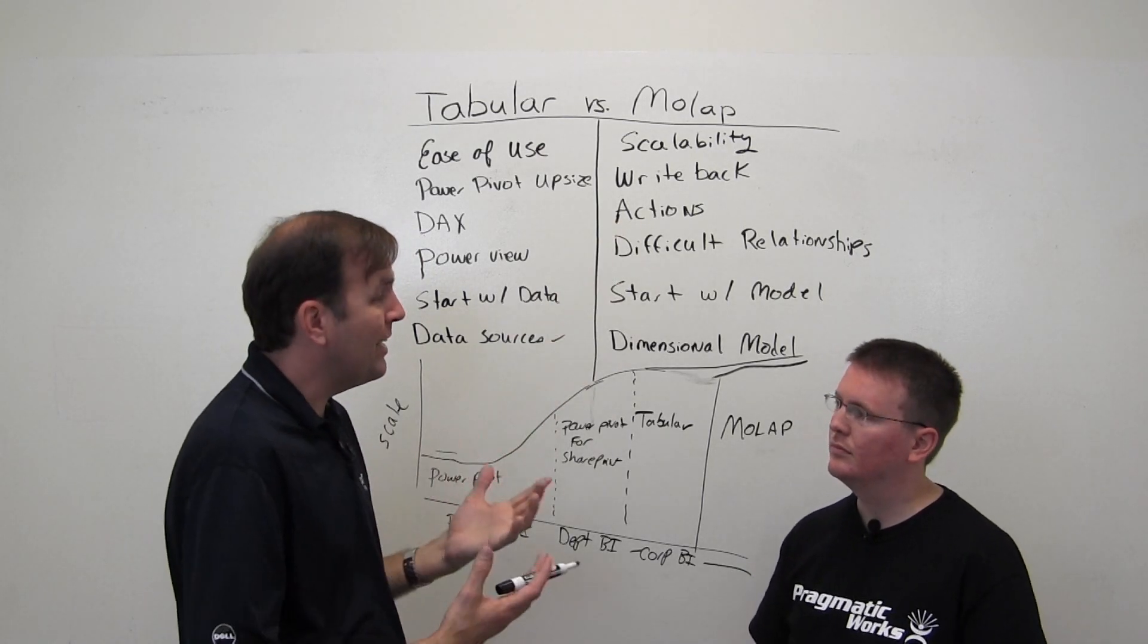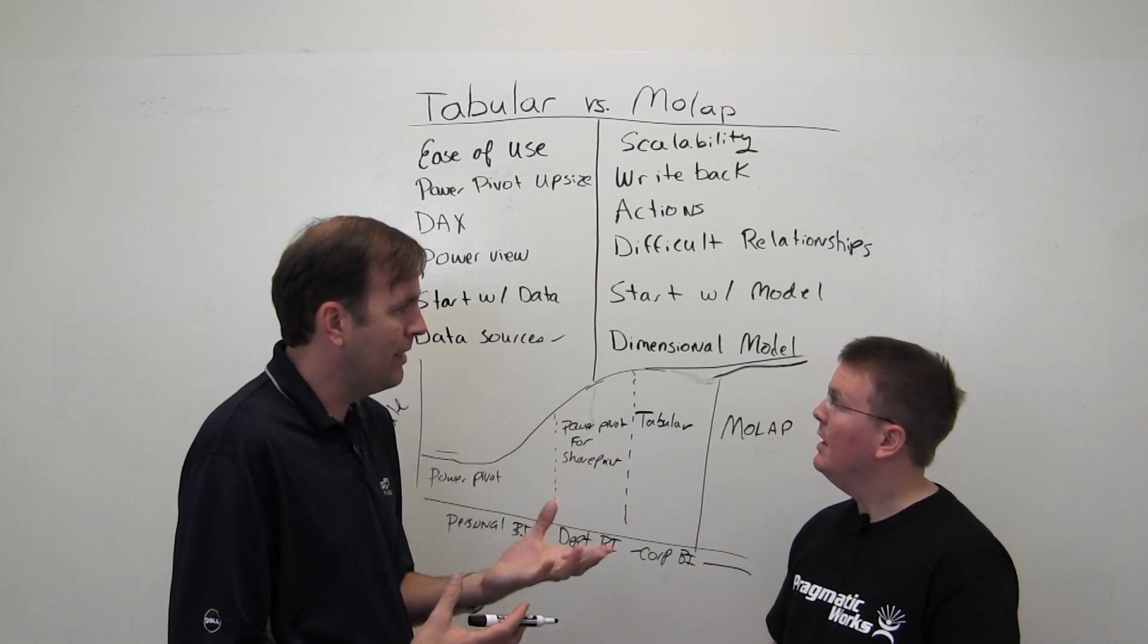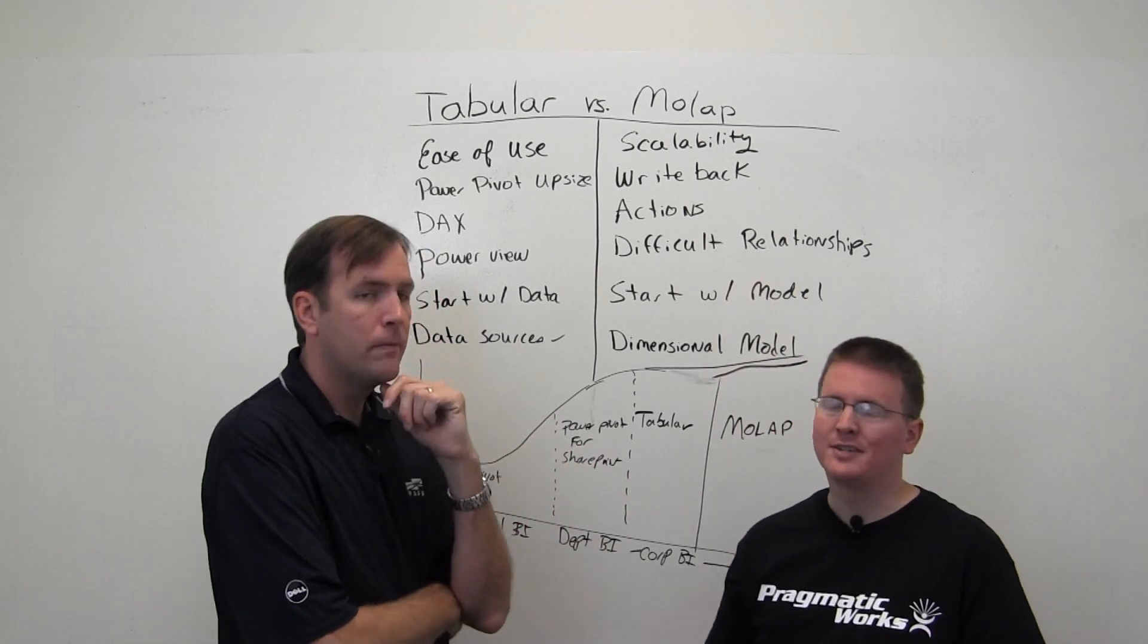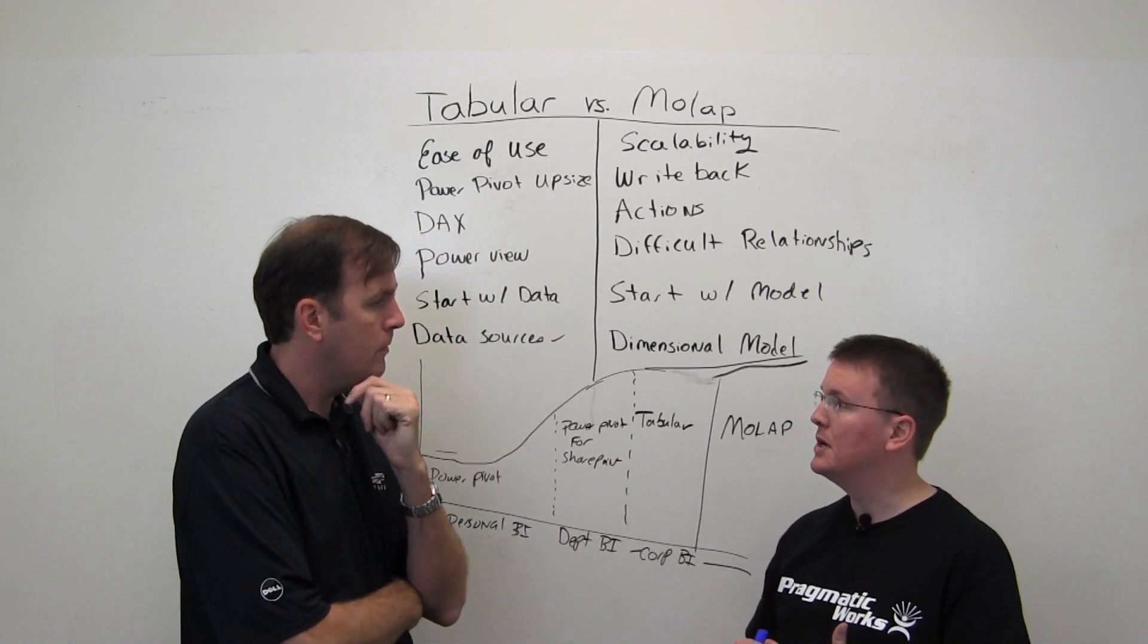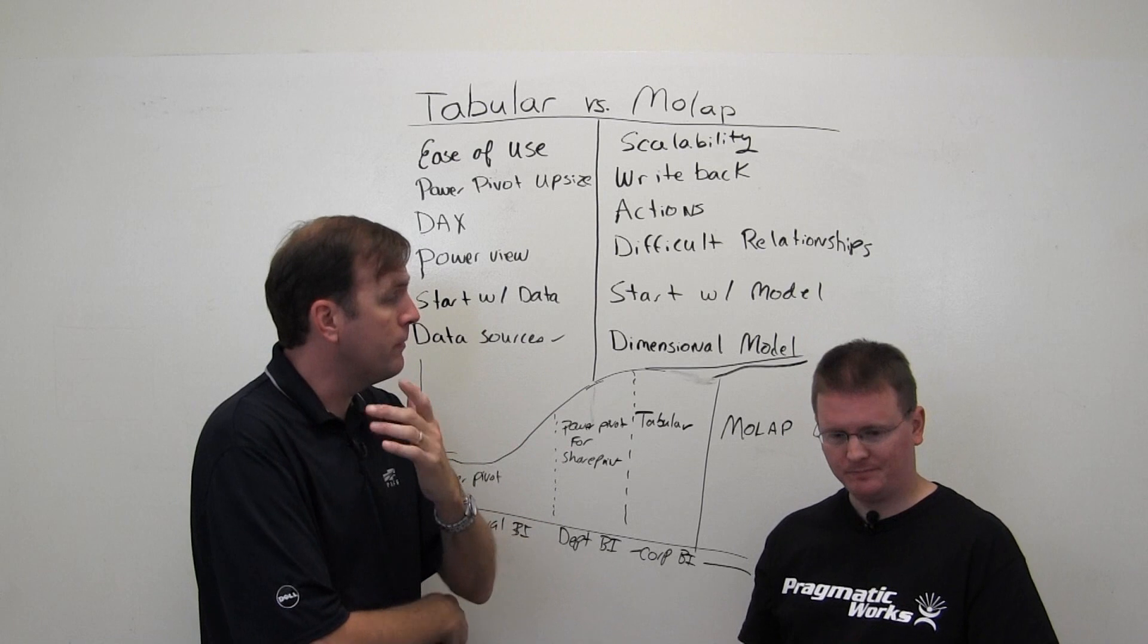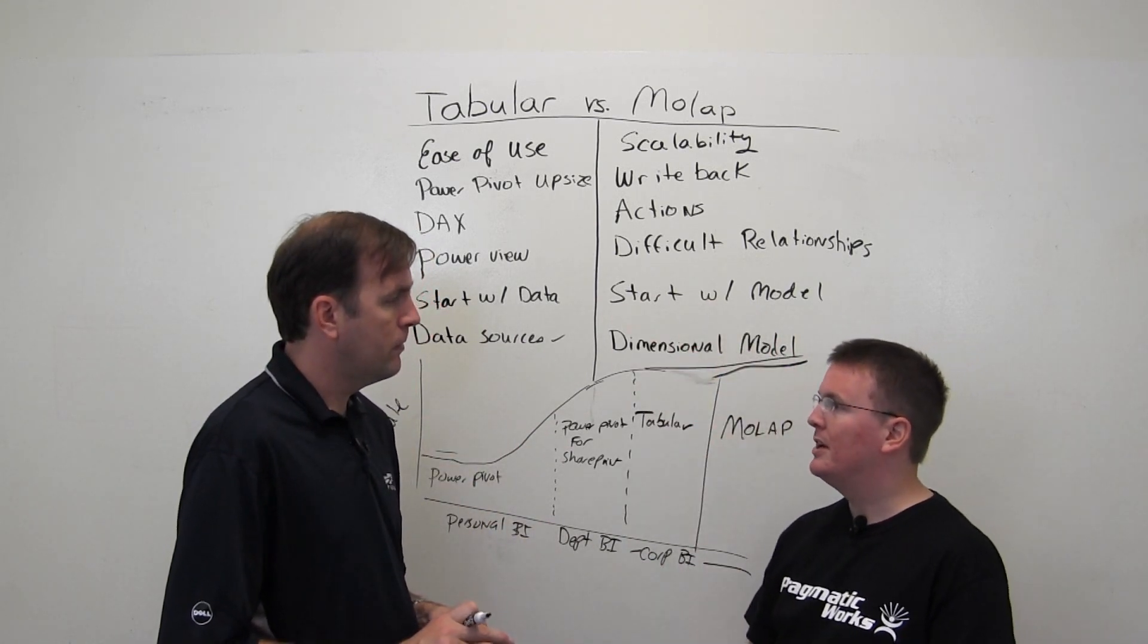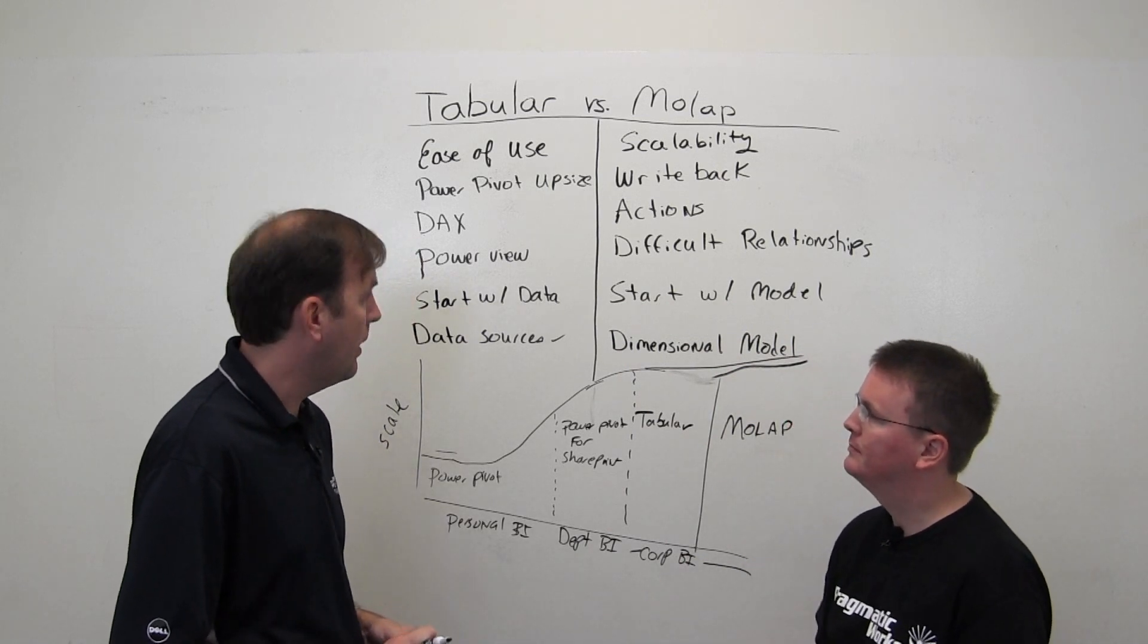Now, actions are pretty cool. I like these. These are really just a whole bunch of ways we can kind of interact with the data. The multidimensional version of Analysis Services has actions that are capable of doing things like jumping to a reporting services report, for example. So kind of closing that loop thing. So having the whole loop of BI all come together. And those functionalities, well I'm sure they will come into Tabular eventually. As of right now, they're not.